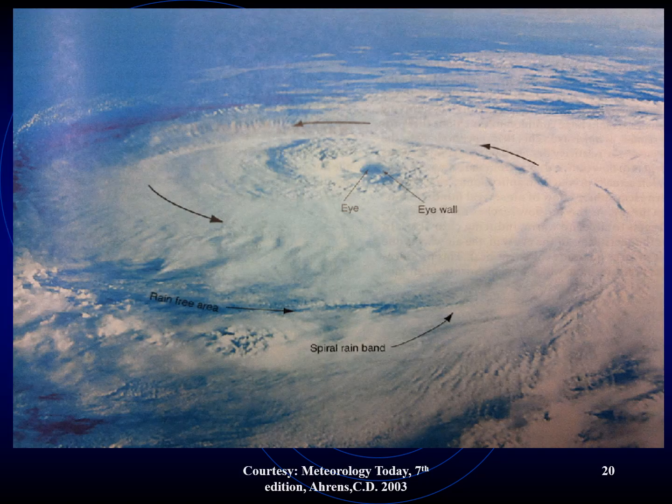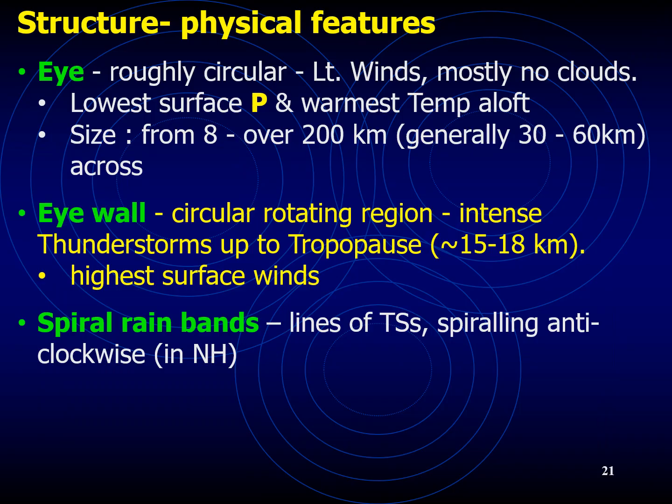This satellite picture shows the formation of the eye and the eye wall around it. The area of broken clouds at the center is the eye — clouds are absent inside the eye, which is why the weather is very clear. The eye is roughly circular with light winds, mostly no clouds, lowest surface pressure, and warmest temperature aloft. Its size is generally between 30 to 60 kilometers. The eye wall is a circular rotating region with intense thunderstorms up to the tropopause, about 15 to 18 kilometers from sea level, with the highest surface winds and spiraling rain bands.